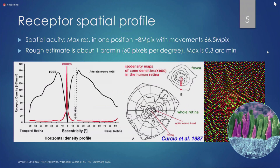If you look at the back of the eye, the sensors are distributed very unevenly. At the center of the retina, close to the fovea, you have a very high peak density of cells, meaning very high resolution. Then suddenly this resolution drops exponentially. So we don't have anything like a uniform CCD — our pixel density at the back of the eye is basically non-uniform. As mentioned: 8 megapixels without movement, and considering movement, 66.5 megapixels. The rough estimate is about one arc minute, which translates to 60 pixels per degree. The maximum found in literature is about 0.3 arc minutes for a very young eye.